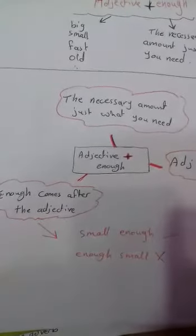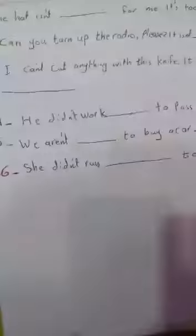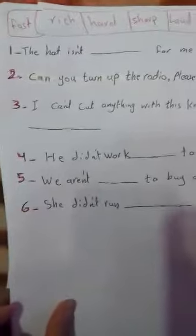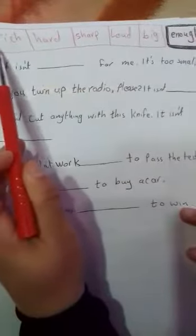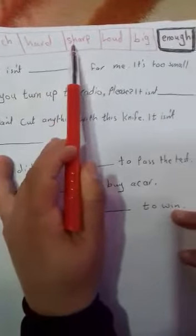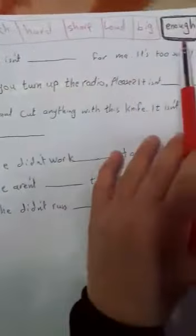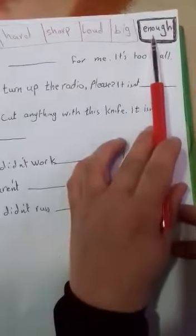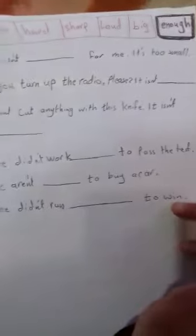Now we have here some exercises. At first, we have a box: fast, rich, hard, sharp, loud, big. All of these are adjectives and we want to put or to write enough. We write adjective at first, then enough.